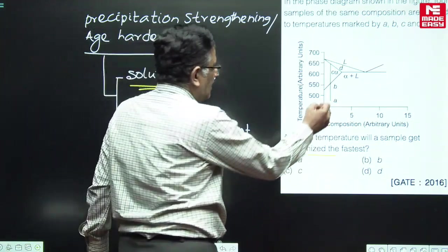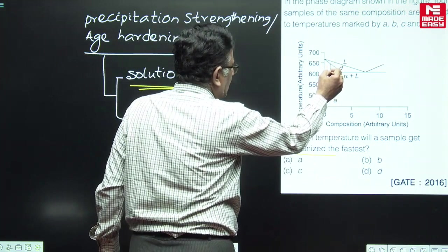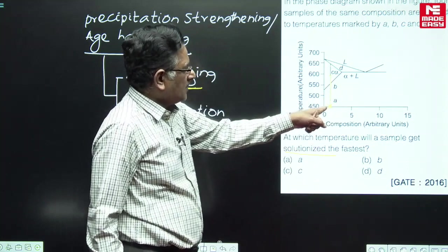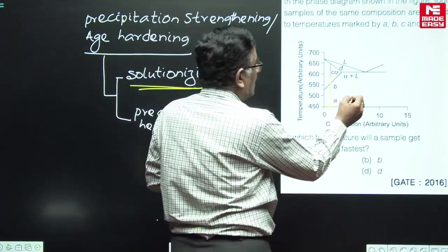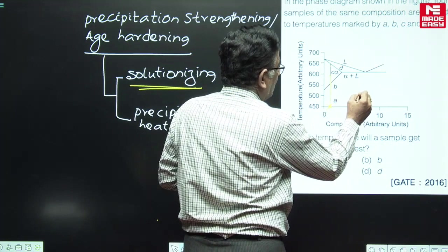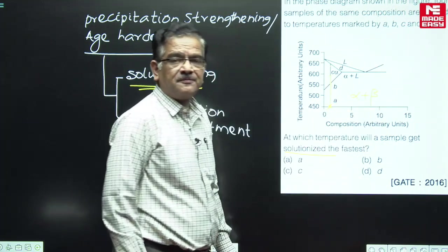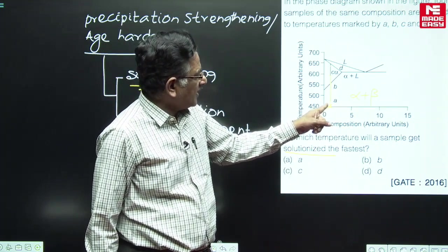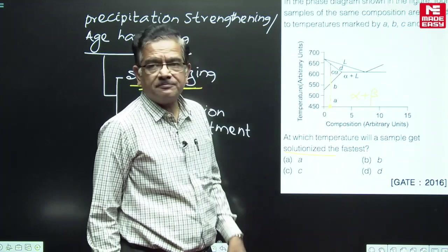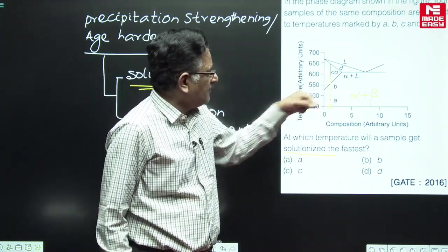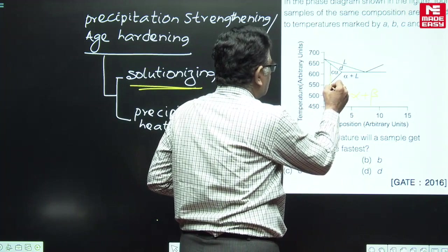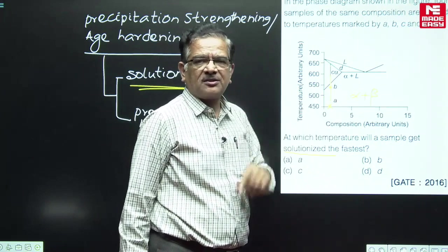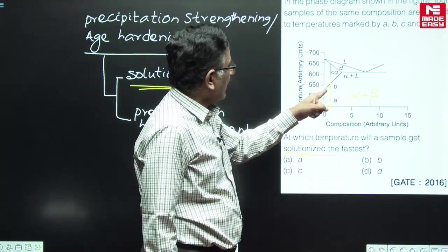This is the composition of the alloy being considered. At room temperature, this composition alloy will contain two phases — we call those alpha plus beta phases. Now if you heat this alloy from room temperature up to temperature B, which is a point below the solvus line, at B there are still two phases present.